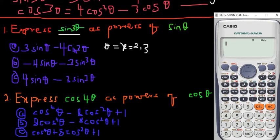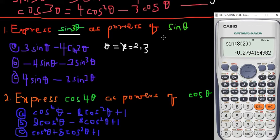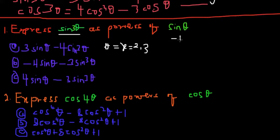Now punch this into your calculator. We have sin(3θ) — that's sin(3x) — and we choose x = 2. So we compute sin(3 × 2). What do we get? We get negative 0.279. So sin(3θ) gives us −0.279. Keep that answer.